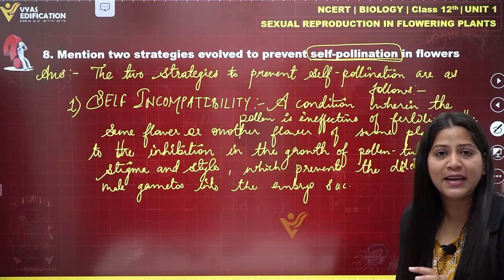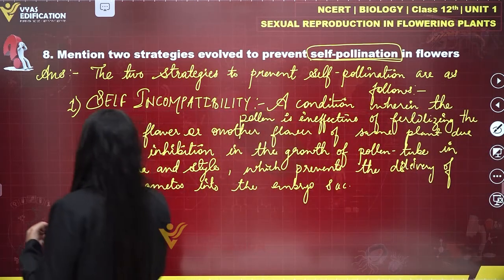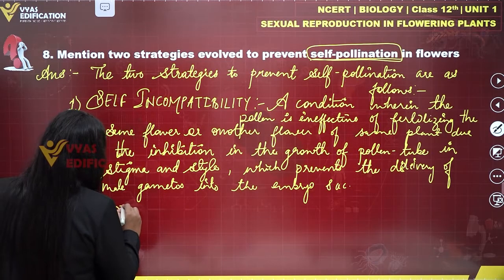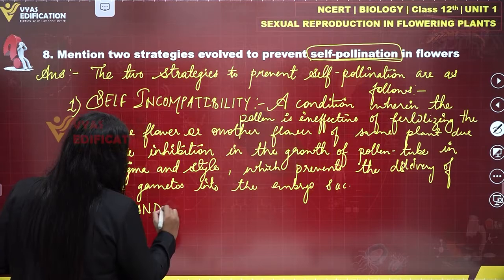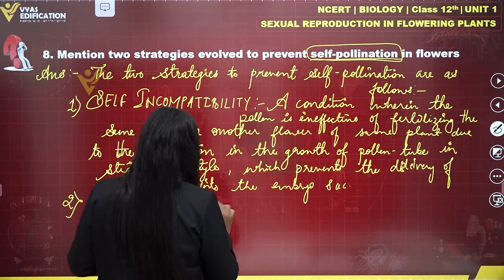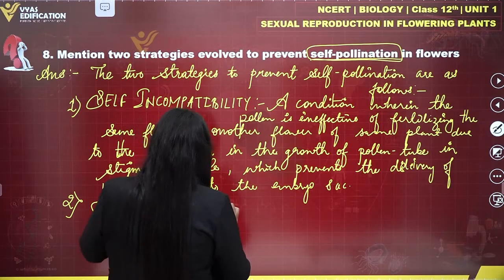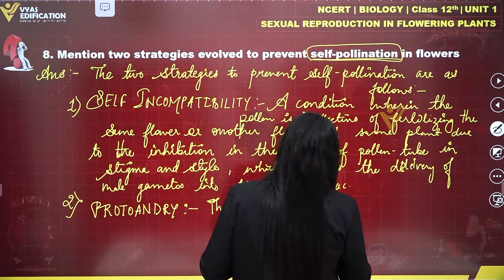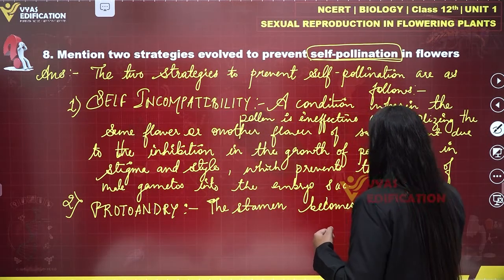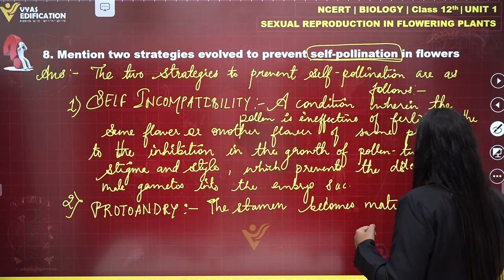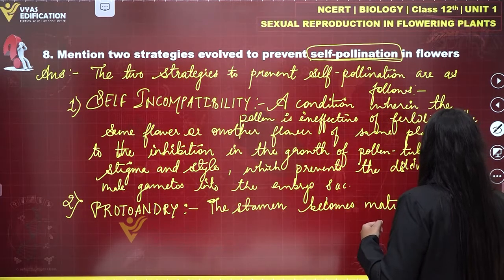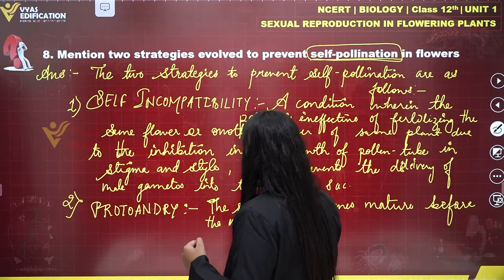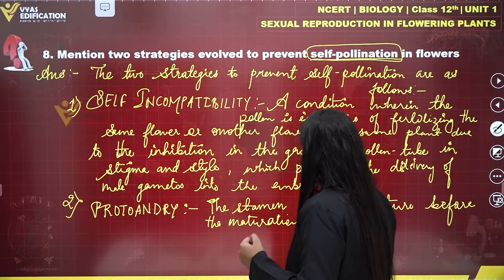The second strategy which prevents self-pollination in flowers is protandry. Protandry is a condition wherein the stamen becomes mature before the maturation of the pistil.